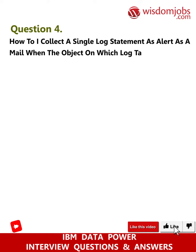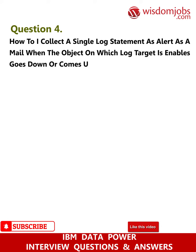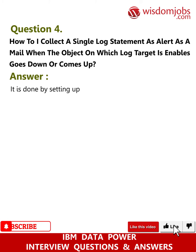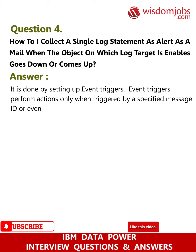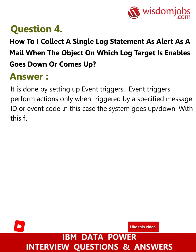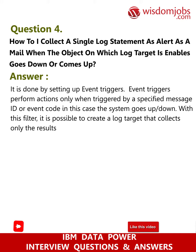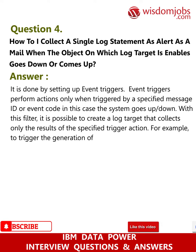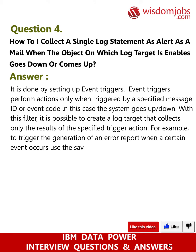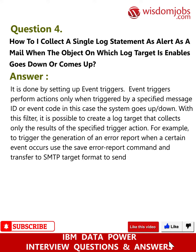Question 4: How do I collect a single log statement as an alert email when the object on which log target is enabled goes down or comes up? Answer: It is done by setting up event triggers. Event triggers perform actions only when triggered by a specified message ID or event code — in this case, the system goes up or down. With this filter, it is possible to create a log target that collects only the results of the specified trigger action. For example, to trigger the generation of an error report when a certain event occurs, use the 'save error report' command and transfer to SMTP target format to send as an email alert.